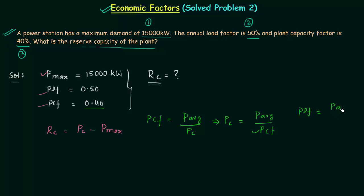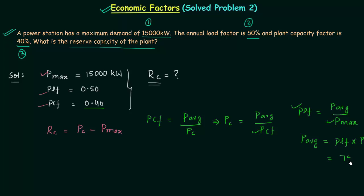Plant load factor is equal to average power over the maximum power. We know PLF and we know Pmax, so we can easily calculate the average power. Average power is equal to PLF multiplied with Pmax. PLF is 0.50 and Pmax is 15,000 kW, so when you solve it you will get 7,500 kW.